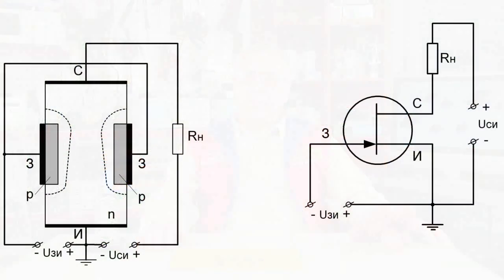A field effect transistor is a semiconductor device. The current flowing through its channel is controlled by the electric field created when a certain voltage is applied to the area between the gate and the source. A field effect transistor is designed to increase capacity of electromagnetic oscillations.